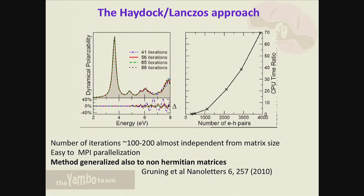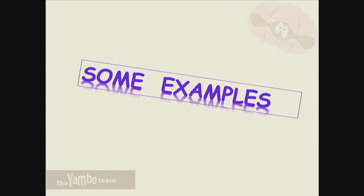In this way you don't have eigenvalues and eigenvectors - only the final spectrum. This is very efficient: you can use very large matrices, it's the only way when memory is a problem, and it converges fast - generally fewer than 100 iterations, parallelized with excellent MPI scaling. Note that you can do this not only for the resonant part but also for the full matrix, as shown in work by Mirtha Gruning and Andrea Marini who extended the iterative solver to the full matrix including the coupling part.